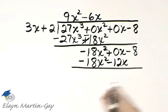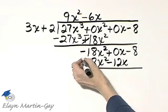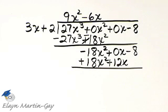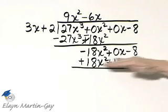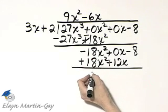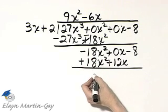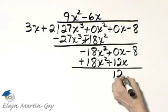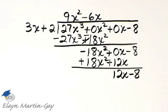I'll draw my line. I'm subtracting, which means I change the signs of each term in this line, along this line where I'm subtracting. So I'll have negative 18x squared plus 18x squared, that's 0, just like I want. 0x plus 12x, that's 12x, minus 8.